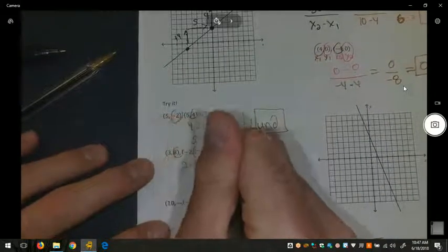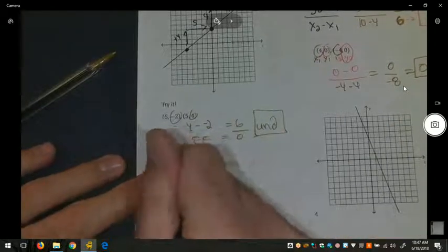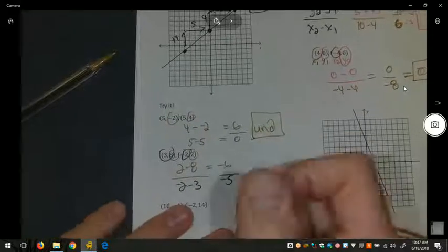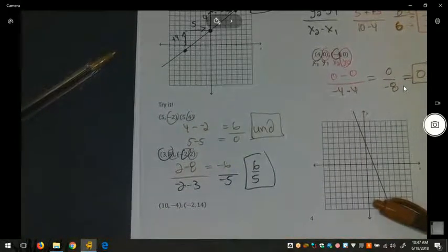For our next one, two minus eight is negative six. Negative two minus three is negative five. Negative divided by negative is positive. This gives us a slope of positive six fifths.